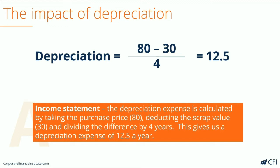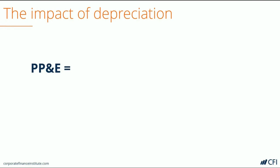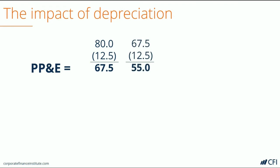But this is only half of the equation. Now let's take a look at what happens on the Balance Sheet. On the Balance Sheet, we have to record a Property, Plant and Equipment balance. In order to record the balance, we take the initial purchase price, reduce it by the Depreciation Expense, and we get the Closing Balance that will go on the Balance Sheet at the end of the first year. Then in the second year, we start where we left off — the prior year. We again deduct Depreciation Expense of 12.5, and we get a Closing Balance in year 2 of 55.